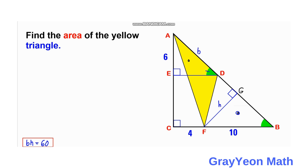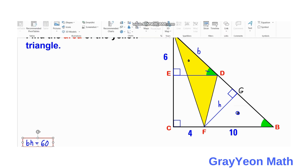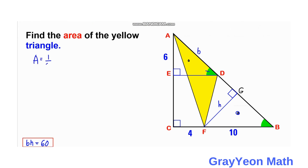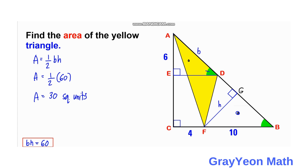For the final step, the area is simply one half times the base AD and the perpendicular height GF. So area equals one half times B times H. But since BH equals 60, simplifying this we get area is equal to 30 square units, and that is our answer.